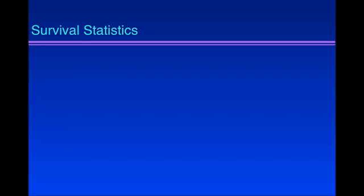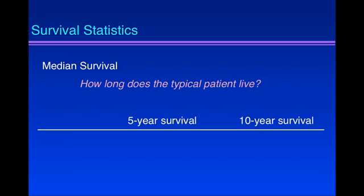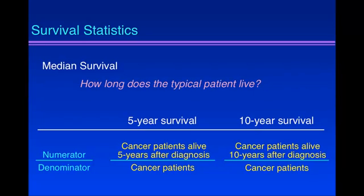Let's talk about the statistics we use to measure survival. One is median survival — it addresses the question: how long does the typical patient live? Literally, the middle value. And then there's 5-year survival and 10-year survival. They're proportions, each with a numerator and denominator. The denominator of 5-year survival is all cancer patients; the numerator is cancer patients alive 5 years after diagnosis. So 5-year survival is the proportion of patients surviving 5 years from diagnosis. 10-year survival is similar, except the numerator is cancer patients alive 10 years after diagnosis.